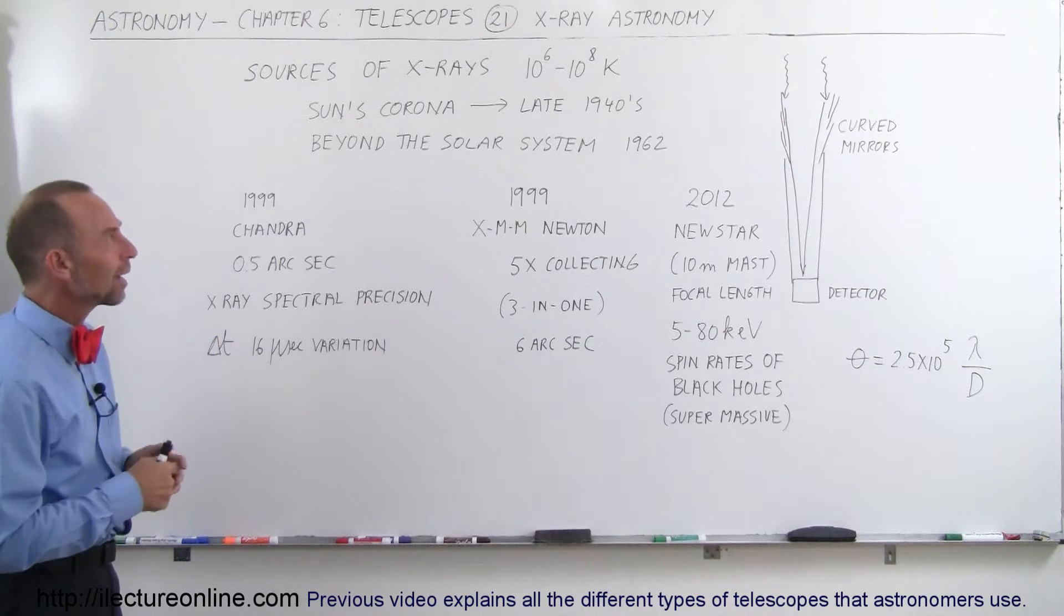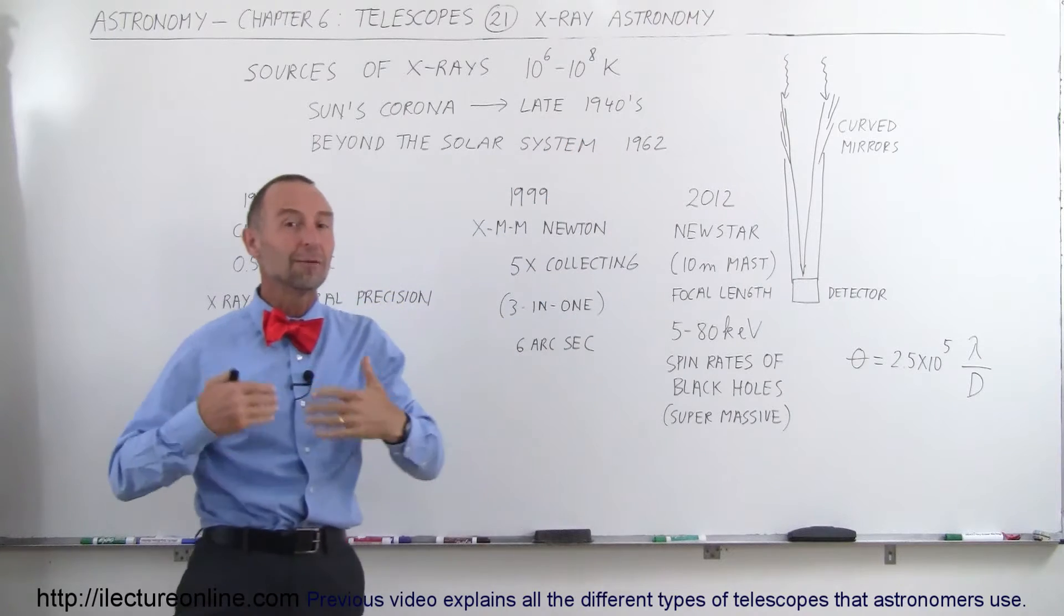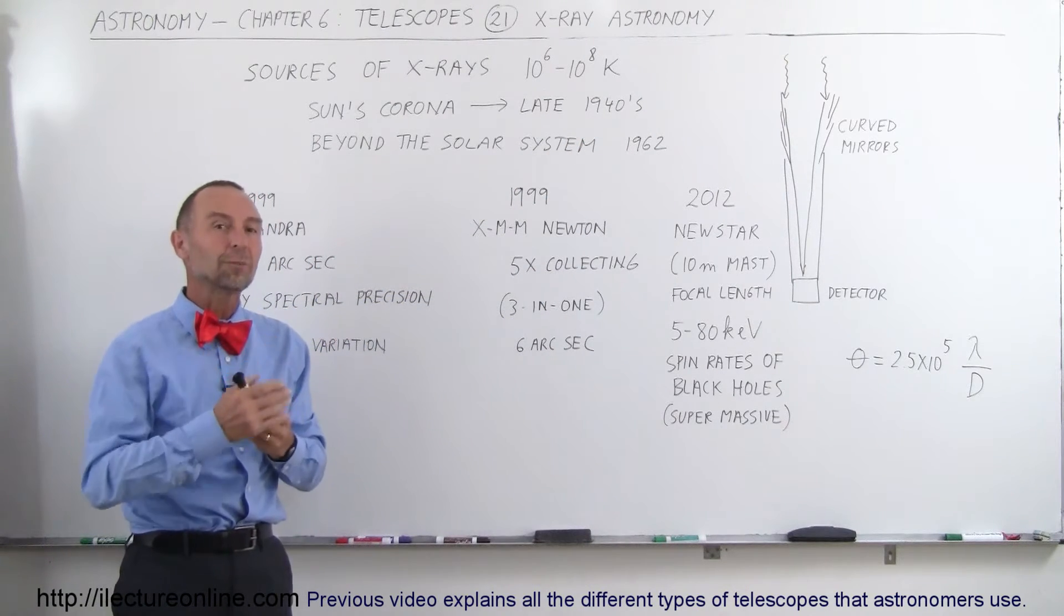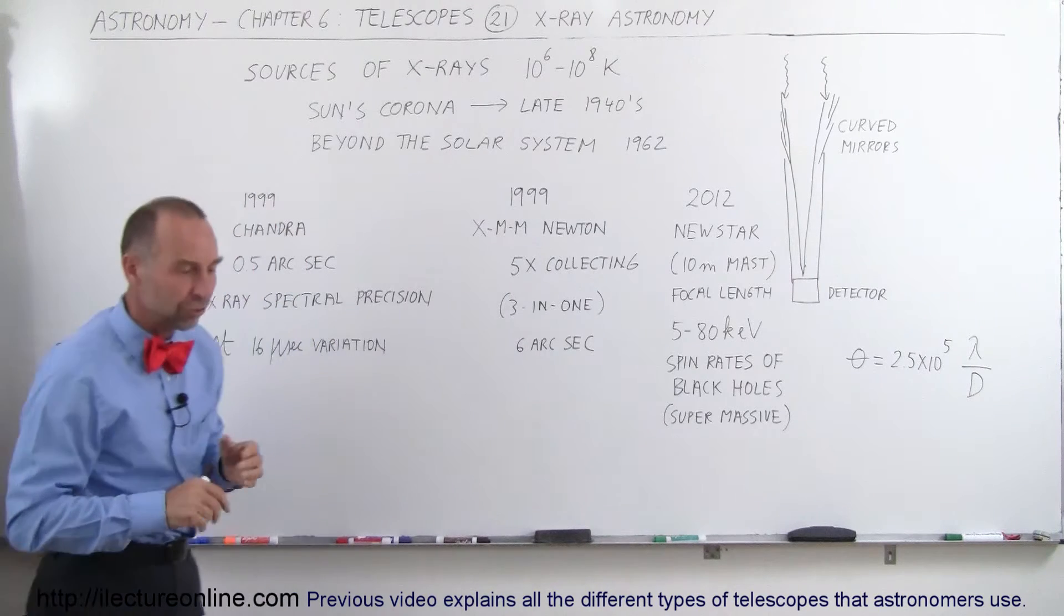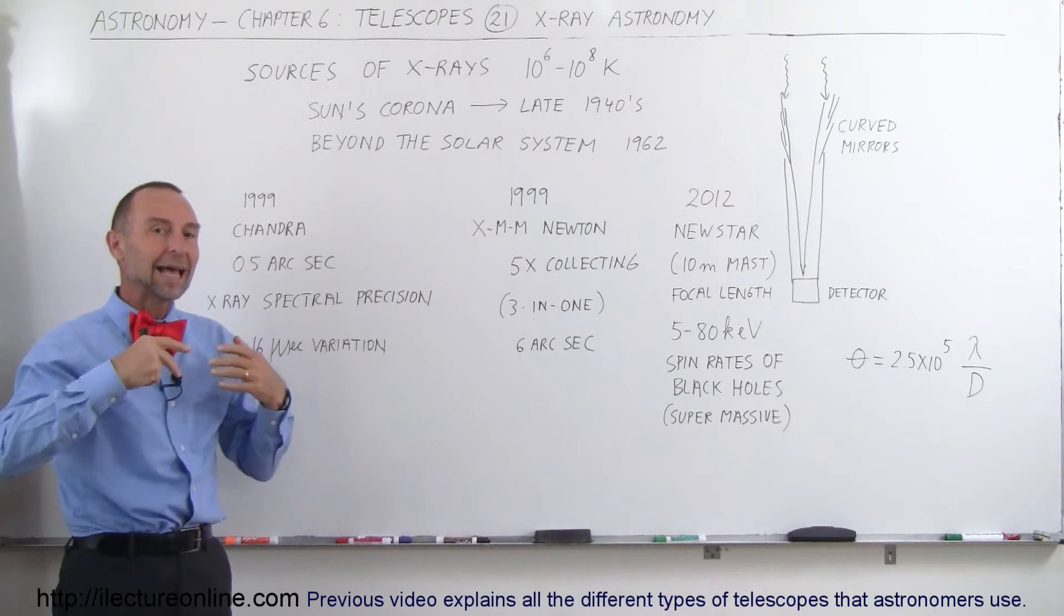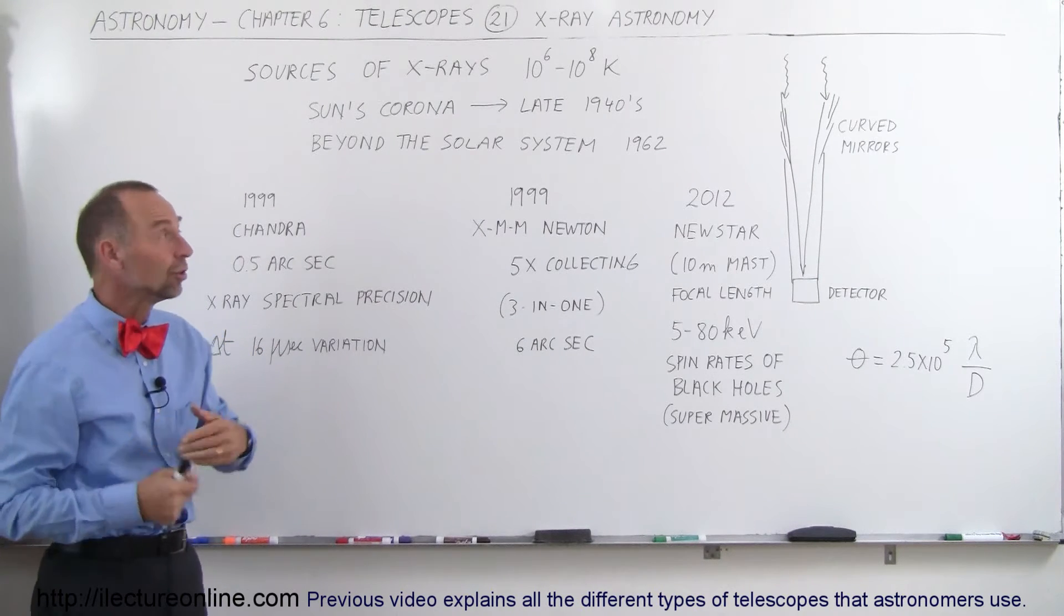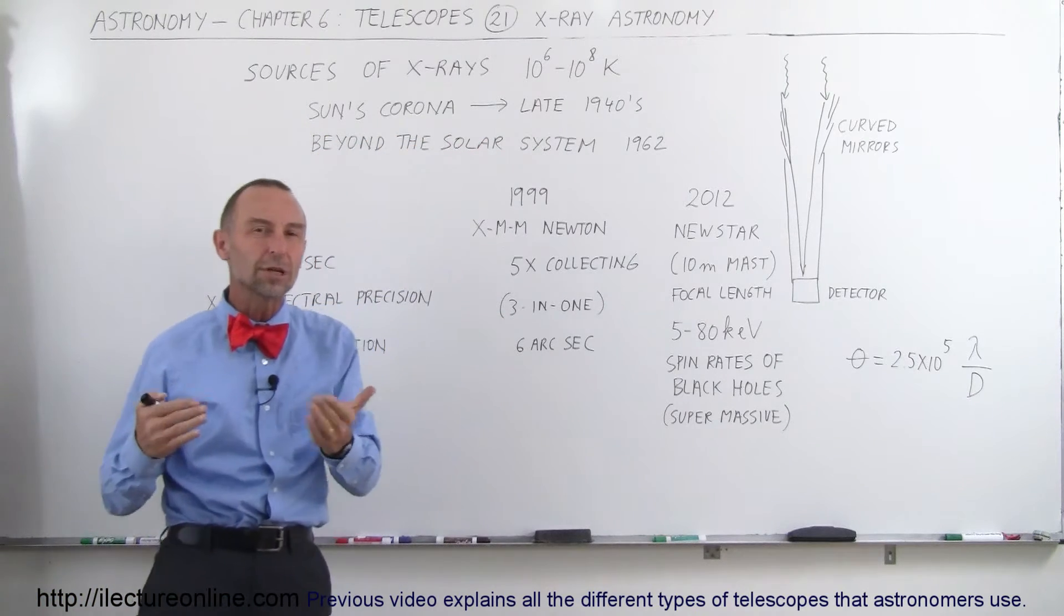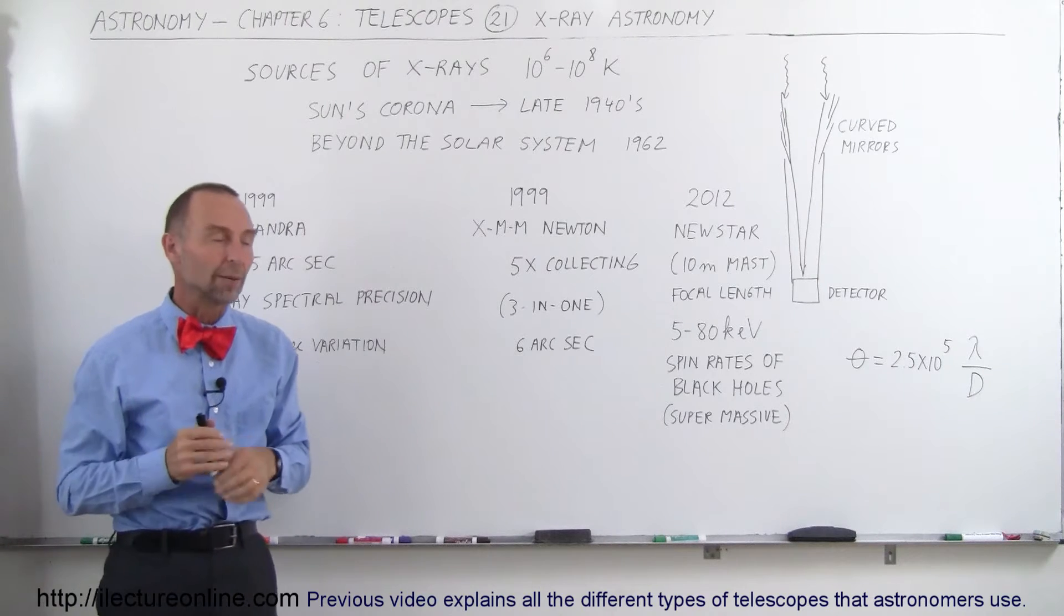Now there were some very early observations, even back in the late 1940s when people were experimenting with rockets and trying to get rockets up into space. When they went to suborbital flight, they had some instruments on board and they actually observed X-ray radiation coming from the sun's corona. Of course, they couldn't pinpoint it, but they had an idea that this is probably where the source was coming from.